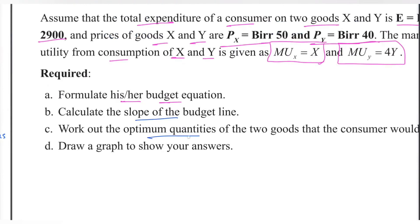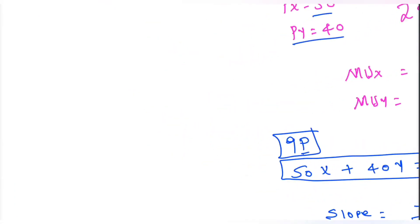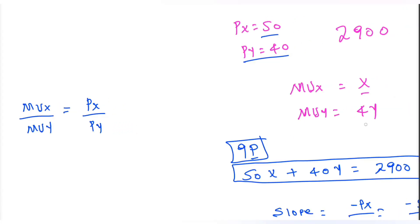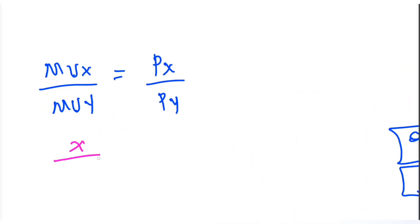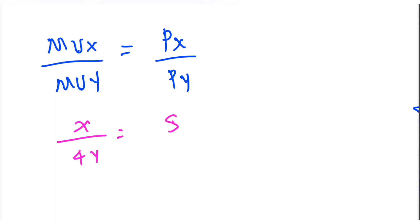Work out the optimum quantities of the two goods that the consumer would buy. At the optimum level, the ratio of marginal utility of x over marginal utility of y must equal the ratio of price of x over price of y. So x over 4y equals 5 over 4.